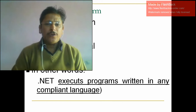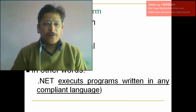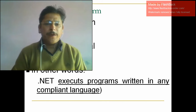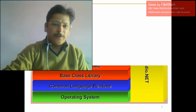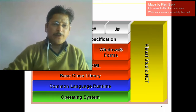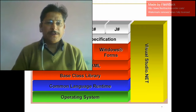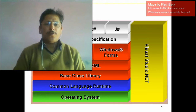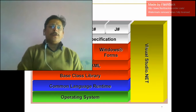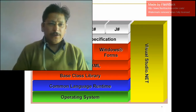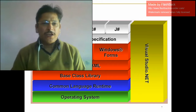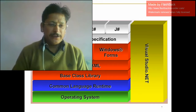.NET executes programs written in any compliant language. The .NET framework can run in a single platform. You can see this structure: in the top layer we have number of programming languages — Visual Basic, C++, C#, J# — and their respective compilers. There are about 50 or more languages supported.